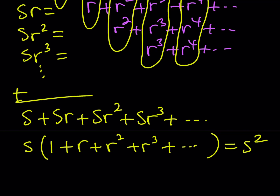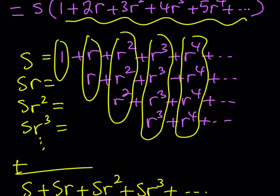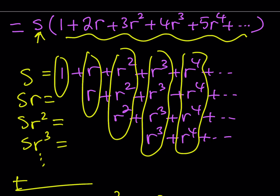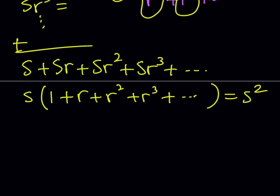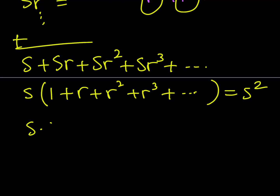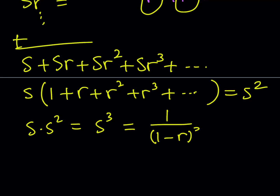So I was able to find that sum, but we need to multiply this by S — because we have an extra S. This is S squared, so what is S times S squared? That's S cubed. S times S squared is equal to S to the third power. So that's our answer. But what is S equal to? Well, S is equal to 1 over (1 minus r). So my answer is going to be 1 over (1 minus r) quantity cubed.